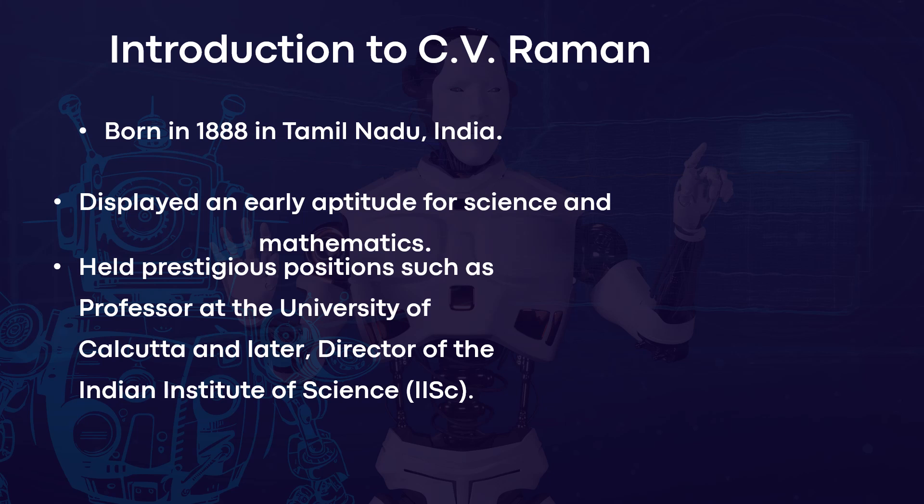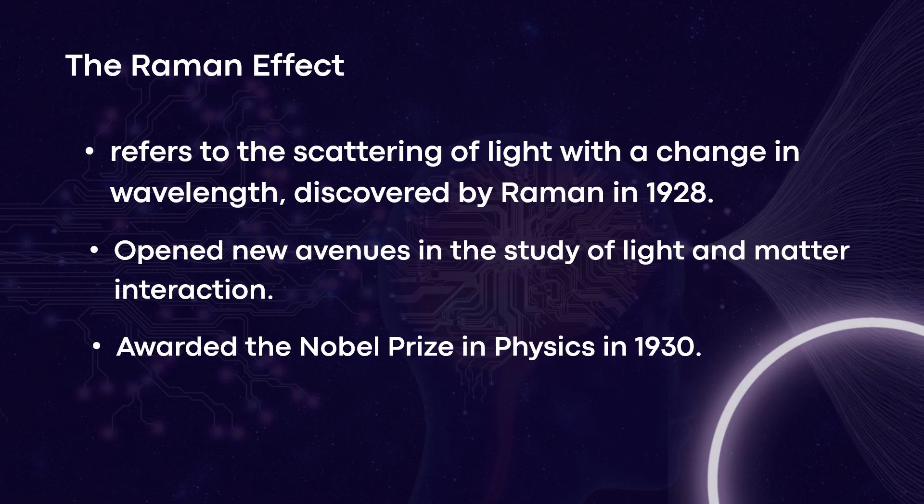Later he held some prestigious positions such as a professor at the University of Calcutta and Director of the Indian Institute of Science (IISc). The Raman effect is a phenomenon which refers to the scattering of light with a change in wavelength, discovered by C.V. Raman in 1928. This opened new avenues in the study of light and matter interaction, and he was awarded the Nobel Prize for Physics in 1930 for this discovery.